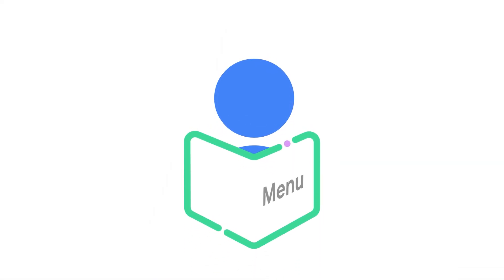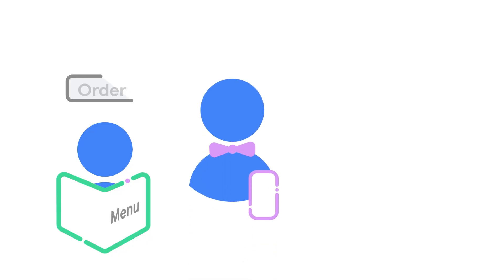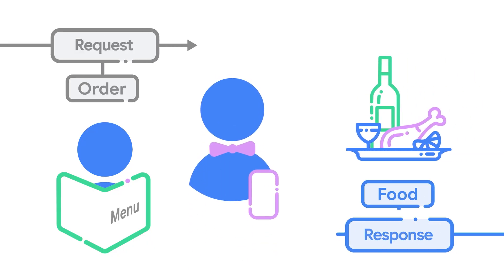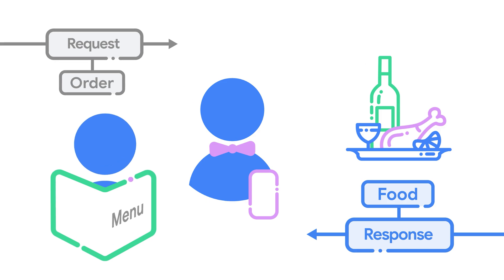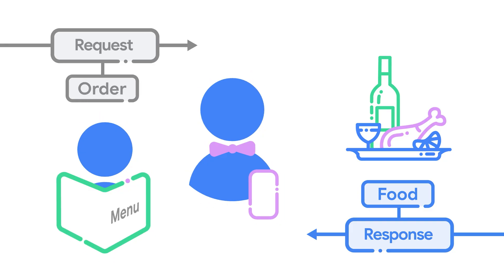You could think of it like ordering food in a restaurant. The order is the request and the food is the response. There's a kind of a protocol for food ordering, a set of simple rules. You request a dish from a member of staff, they take your order and pass that onto the kitchen, and if all goes well, you get your meal in response.